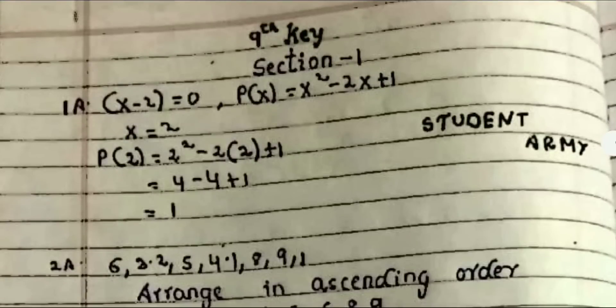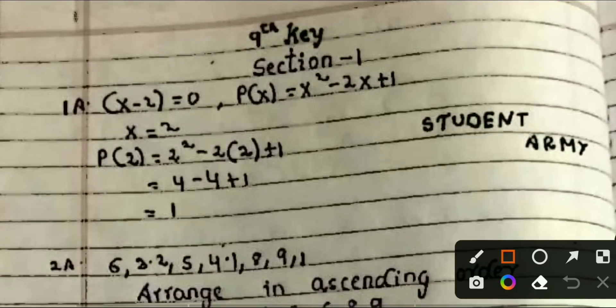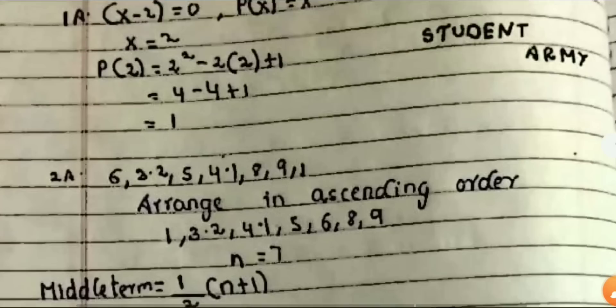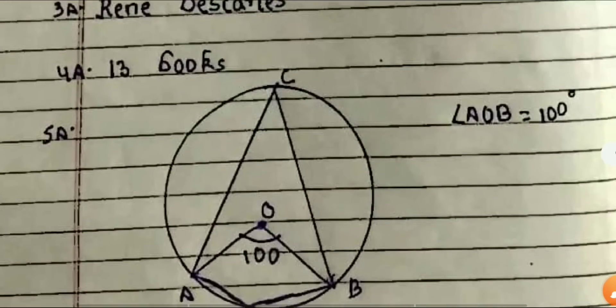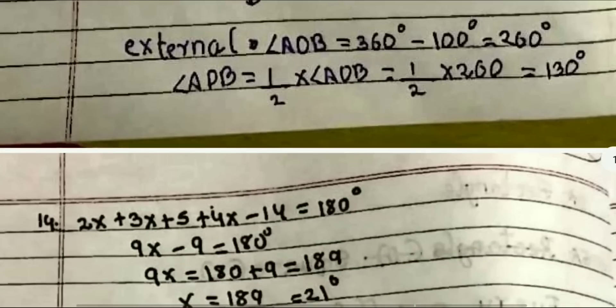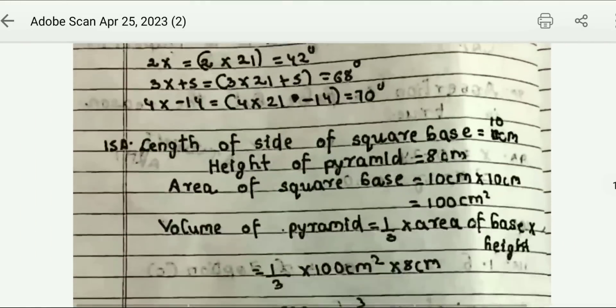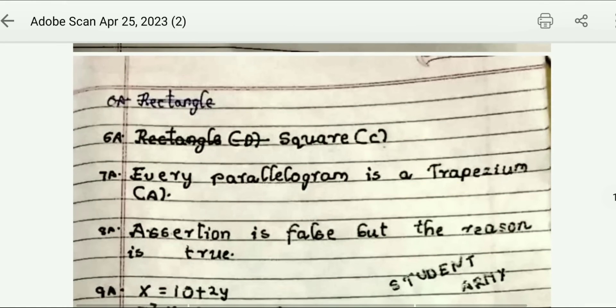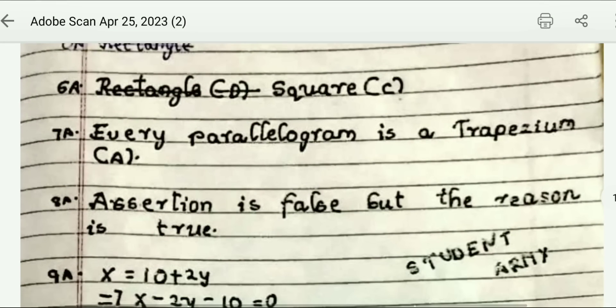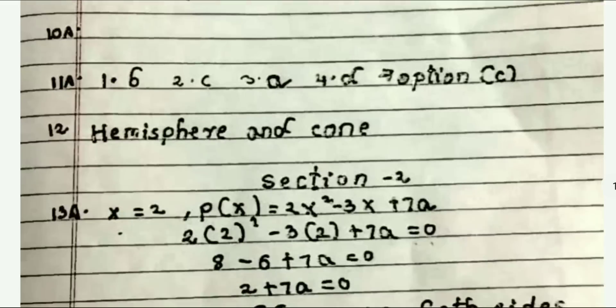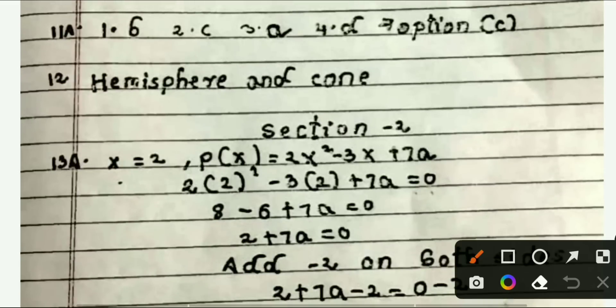Next you can see question 33, and then the answer key section. This is your answer key — here is the first answer, then second, third, fourth, fifth — all question answers you can see. Then answer 14, answer 6, answer 7, answer 8, answer 9, answer 10, answer 12.